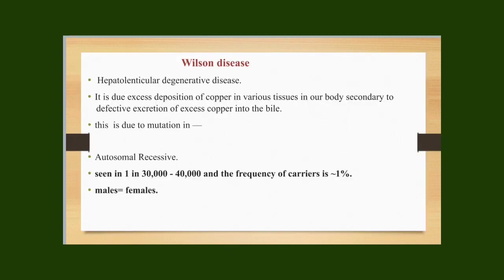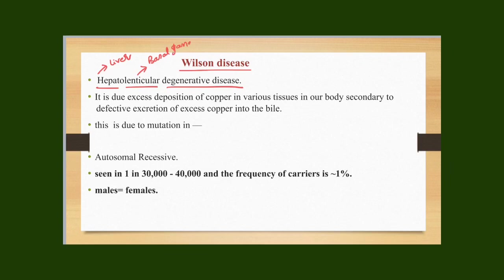Wilson's disease is an inherited metabolic disorder of copper. It is also called hepatolenticular degenerative disease because the primary organs involved are the liver and the lenticular nucleus of the basal ganglia. These two organs are the most commonly involved in this disease.